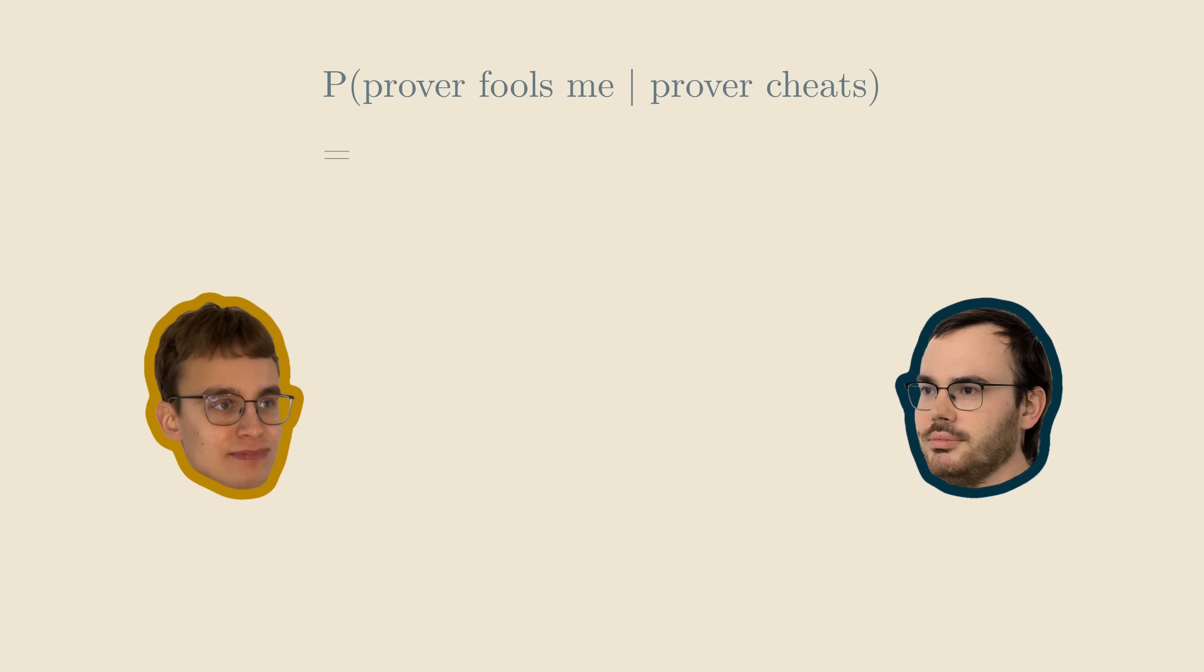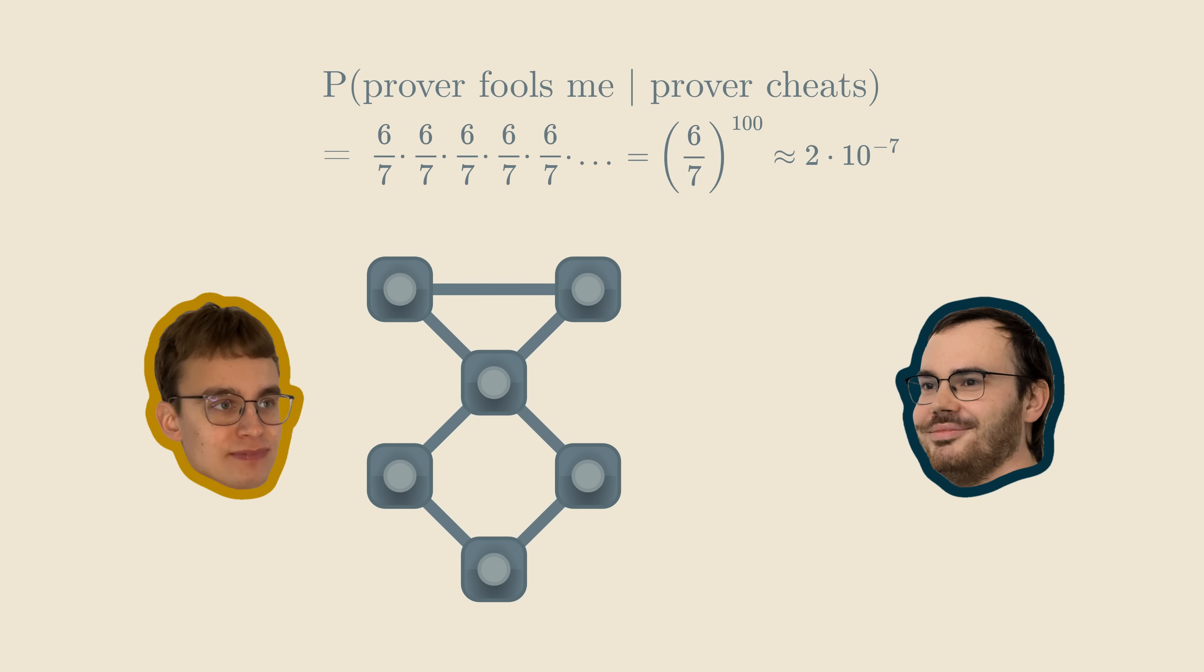I can apply the same reasoning in my case. Even if I have only a small probability of finding a mistake in one round, I can make this probability much higher by simply repeating our simple protocol over and over and over, let's say 100 times. This way, if the prover's solution is incorrect, the probability that he survives all my challenges is at most 6/7 to the power of 100, which is about 1 in 10 million, and that's good enough for me. So, we have a zero-knowledge proof. Or do we?